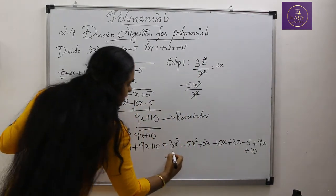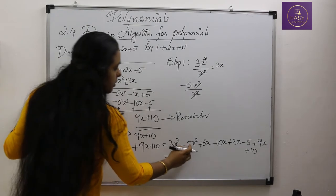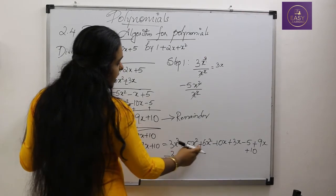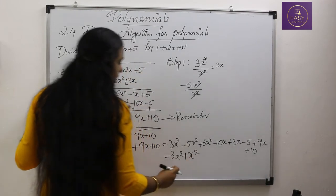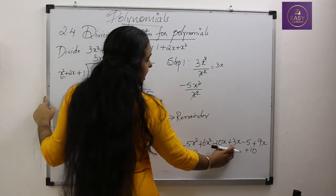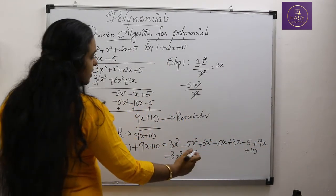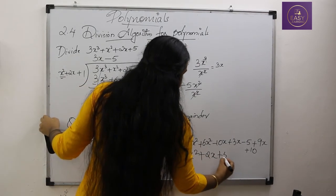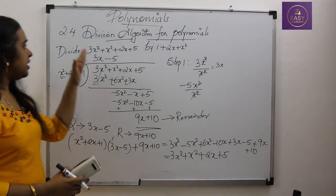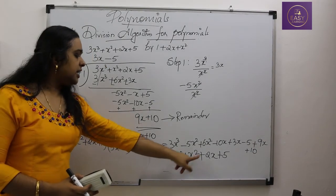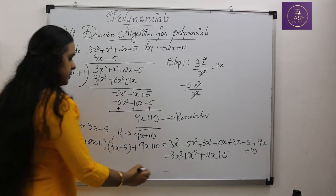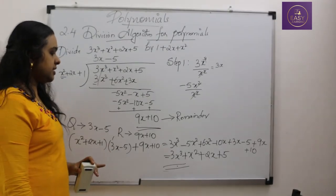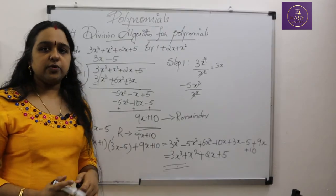Collecting like terms: 3x³, then −5x² + 6x² = x², then −10x + 3x + 9x = 2x, and −5 + 10 = 5. This gives us 3x³ + x² + 2x + 5, which is exactly our dividend. So we have proved the division algorithm. We will do more problems and it will become more clear.